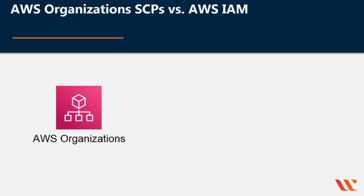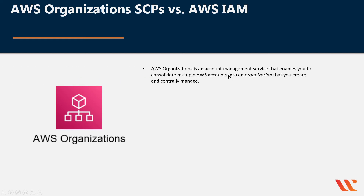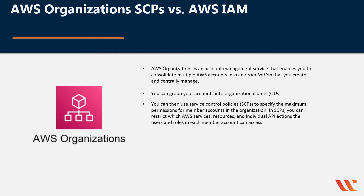Let's first take a look at AWS Organizations SCPs — Service Control Policies. If you look at this icon you can see that it is a hierarchy, and that's what this does. AWS Organizations is an account management service that enables you to consolidate multiple AWS accounts into an organization that you create and centrally manage. You can group your accounts into Organizational Units or OUs, and then use Service Control Policies or SCPs to specify the maximum permissions for member accounts in the organization. In SCPs you can restrict which AWS services, resources, and individual API actions the users and roles in each member account can access.